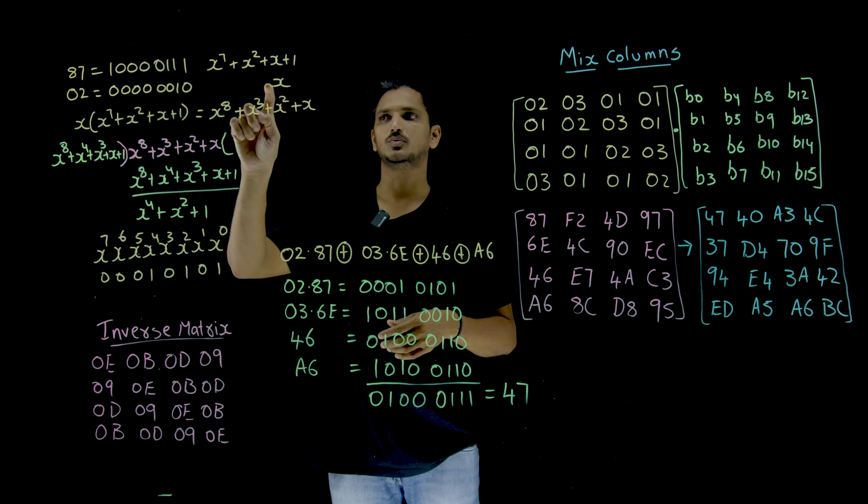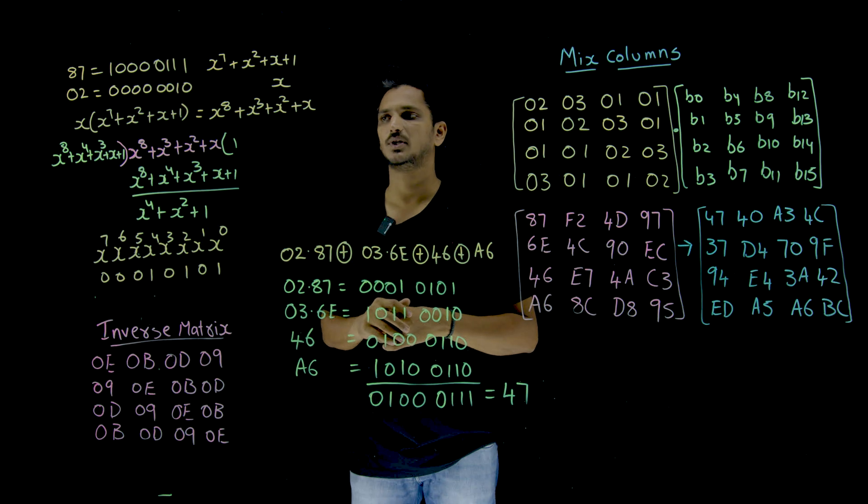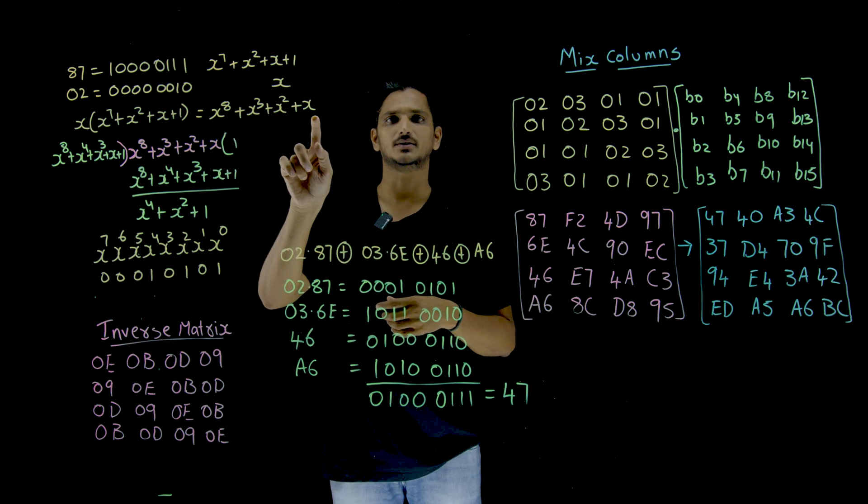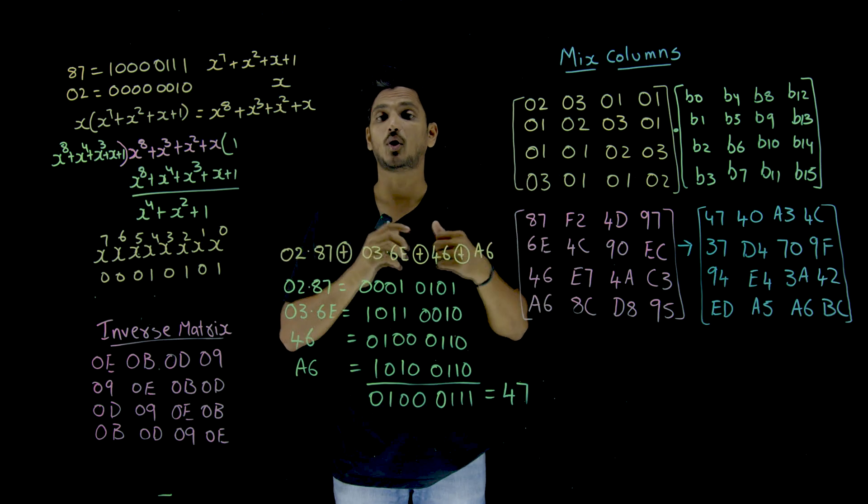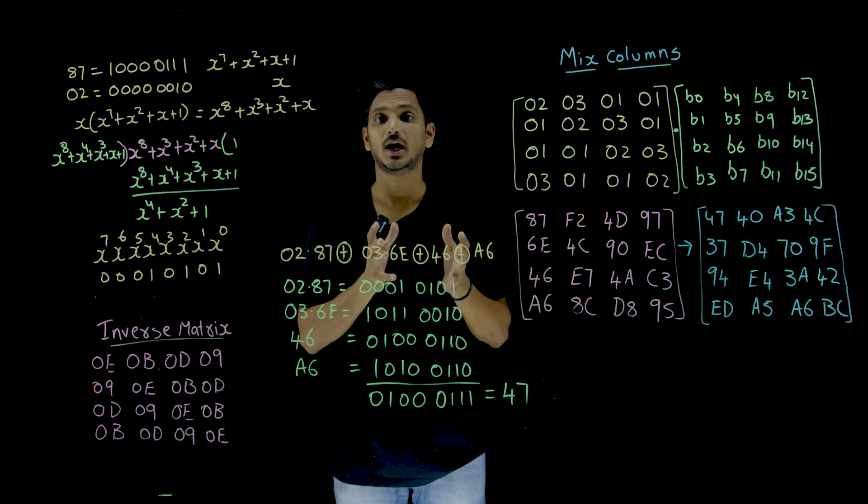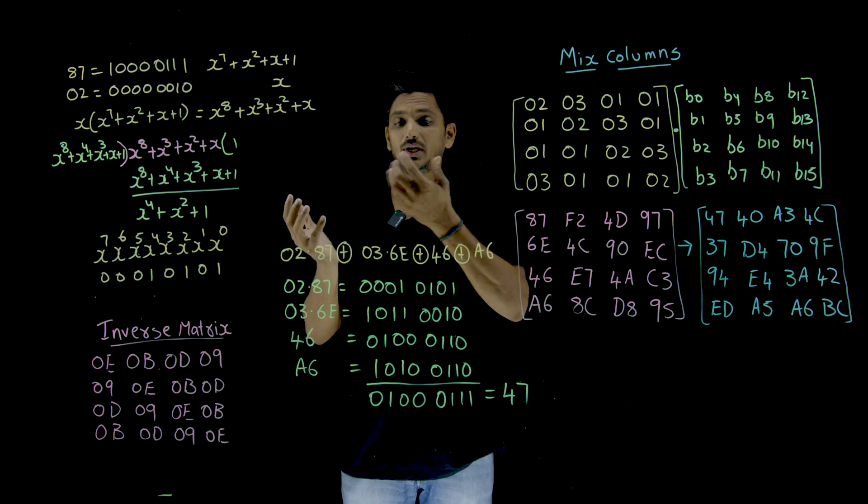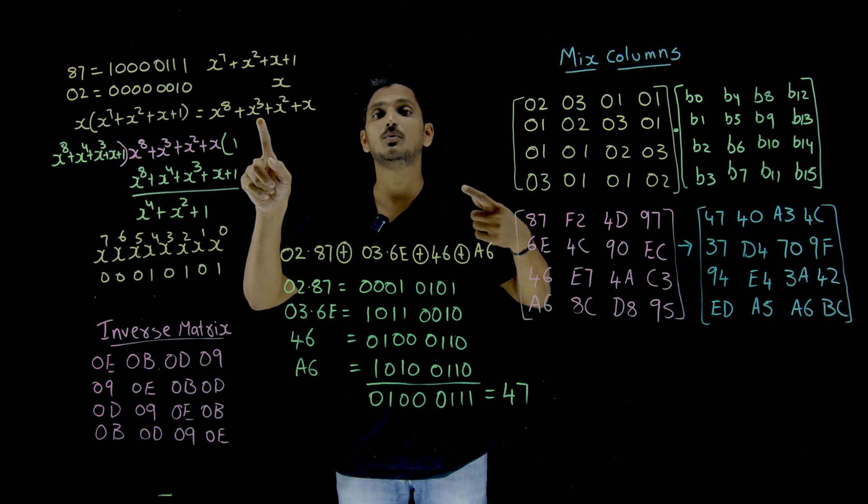Multiply these two. Means X multiplied by X power 7 plus X square plus X plus 1, which you are going to get X power 8 plus X cube plus X square plus X. This is in the form of above X power 7. In the polynomial equation, GF of 2 power 8, the highest polynomial degree should be X power 7. If you want to bring it back, you have to divide this using the irreducible polynomial.